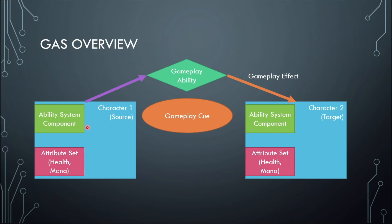The Attribute Set is a collection of attributes — for example, health is an attribute, mana can be an attribute, your experience or the amount of gold you have are also attributes. Character One can cast an ability using the Ability System Component. A Gameplay Ability can be something like jumping, shooting, or casting a fire spell — anything you can think of as an ability is an ability.